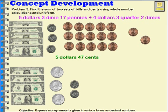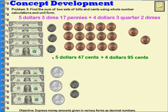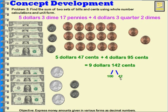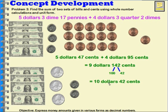Down here we have four dollars, three quarters, and two dimes. Three quarters is seventy-five cents, plus two dimes is ninety-five cents — so four dollars and ninety-five cents. Adding the two amounts: nine dollars from the dollars, then taking five cents from forty-seven to combine with ninety-five makes a whole dollar, leaving forty-two cents. So the total is ten dollars and forty-two cents.